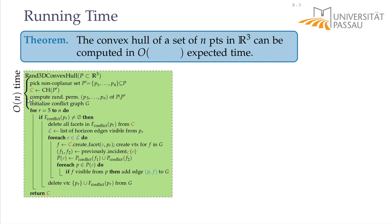The random permutation is clear. Initializing the conflict graph takes linear time since its initial size is linear. The convex hull of 4 points is constant time. To pick the first 4 non-coplanar points, we pick 3 random ones, then try all n minus 3 others to find one not coplanar with the first 3. If none exists, all points are coplanar and we have a 2D problem. Otherwise we find one in O(n) time.